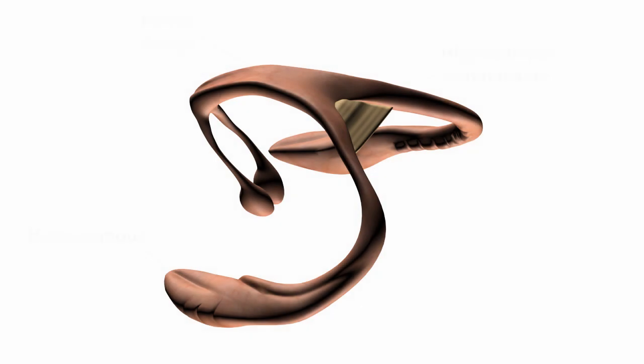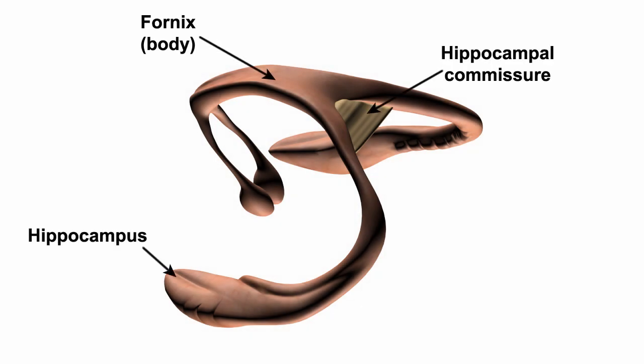The final major commissure is the hippocampal commissure, also known as the commissure of the fornix. This commissure tract connects the two hippocampi in the temporal lobes of the cerebrum.